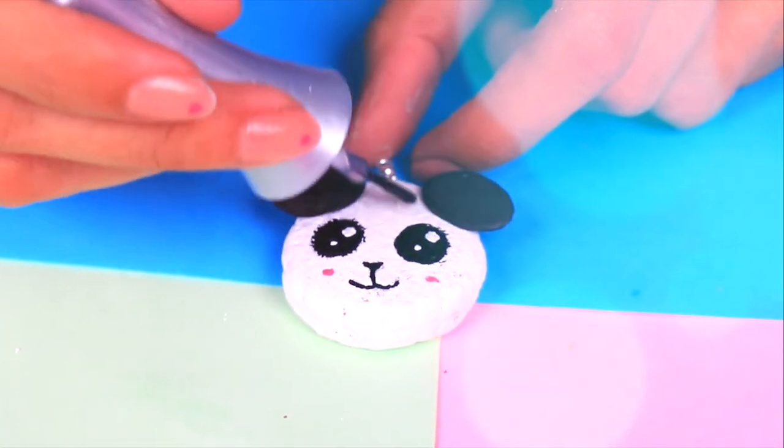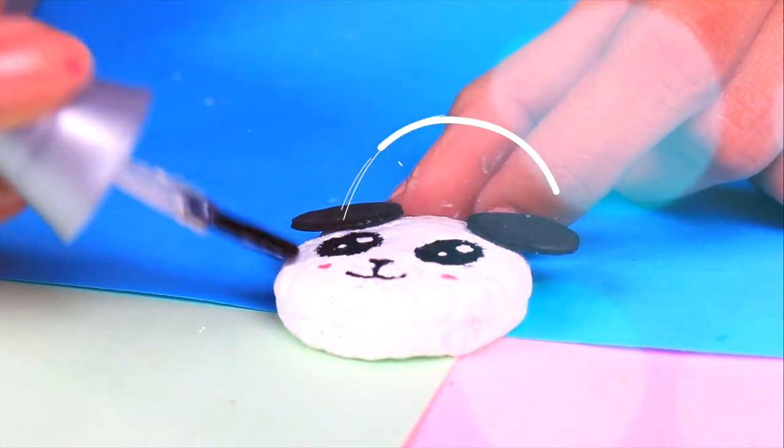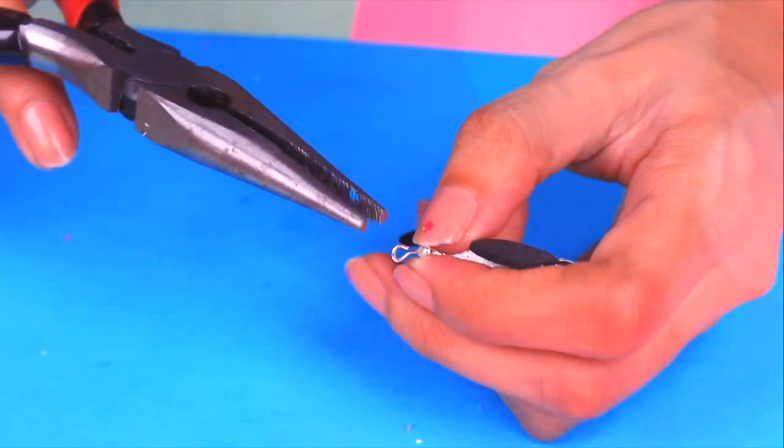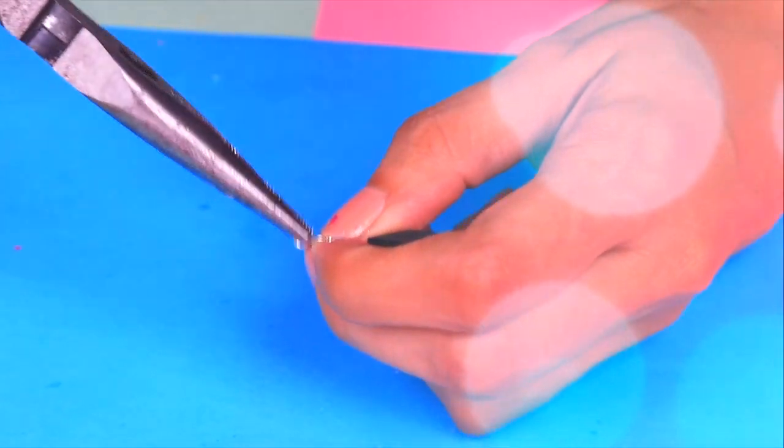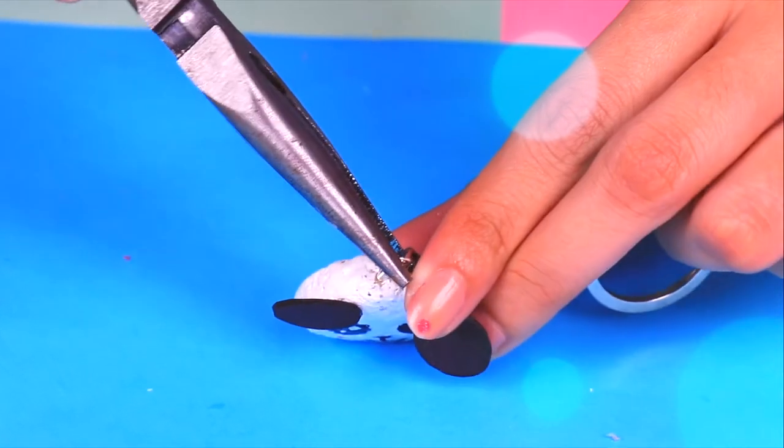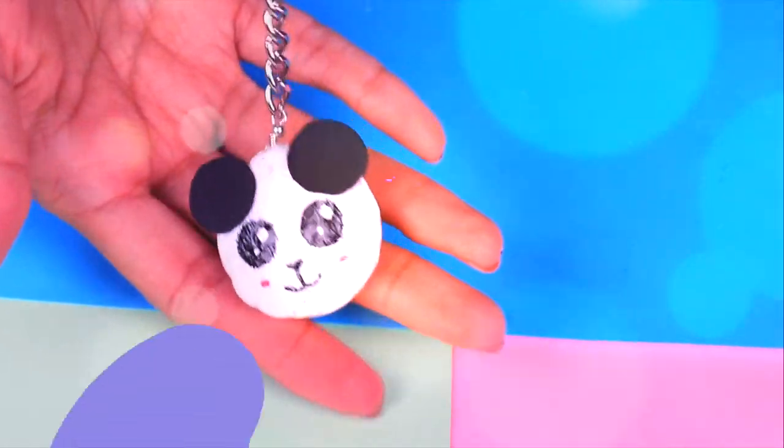For the final touch we will just need to apply a thin layer of clear nail polish so it ends up looking very nice. Then we will use a pair of pliers to open this part of the hook so we can put the actual key holder inside. Once we have them inside we will use the pliers again but this time to close the hook. And that's it! It's super cute! Don't you agree?